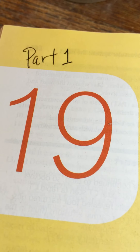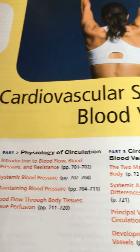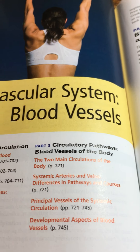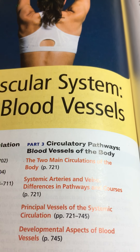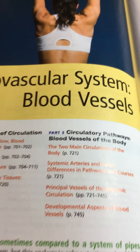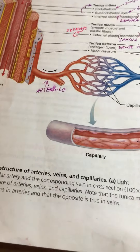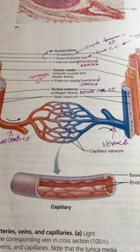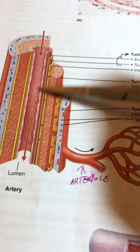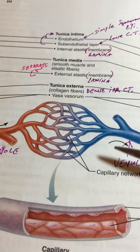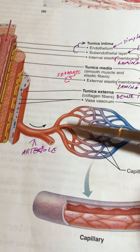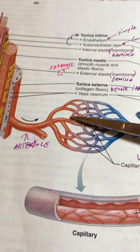We're on part one of chapter 19, the cardiovascular system of blood vessels. We're going to study blood vessels, picking up on page 694 with this visual, which pertains to the artistic rendition of what is an artery and its parts. This leads to a capillary system.